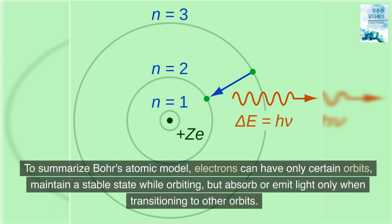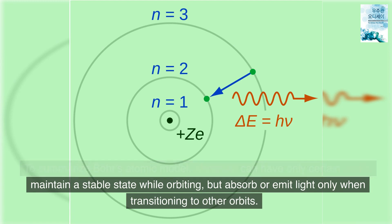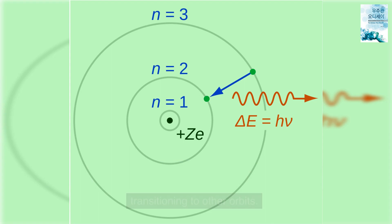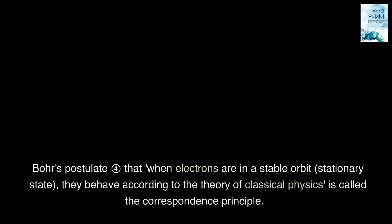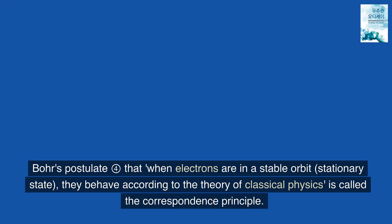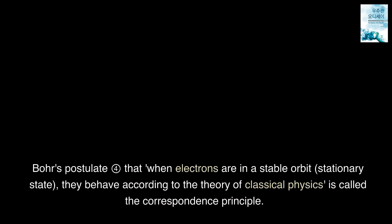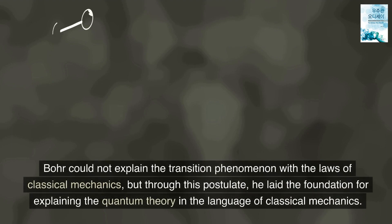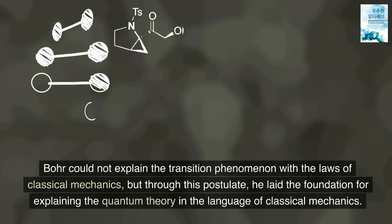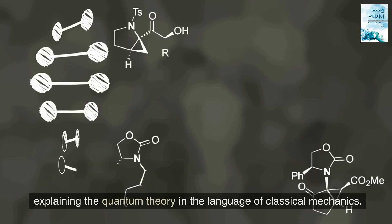To summarize Bohr's atomic model, electrons can have only certain orbits, maintain a stable state while orbiting, but absorb or emit light only when transitioning to other orbits. Bohr's postulate for that when electrons are in a stable orbit, stationary state, they behave according to the theory of classical physics is called the correspondence principle. Bohr could not explain the transition phenomenon with the laws of classical mechanics, but through this postulate, he laid the foundation for explaining the quantum theory in the language of classical mechanics.